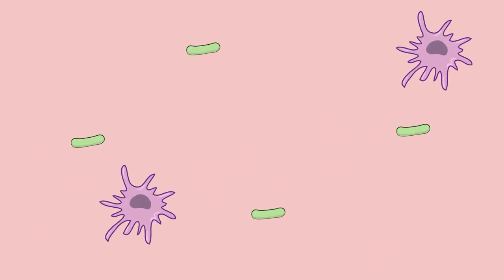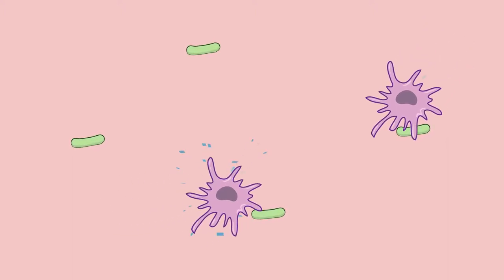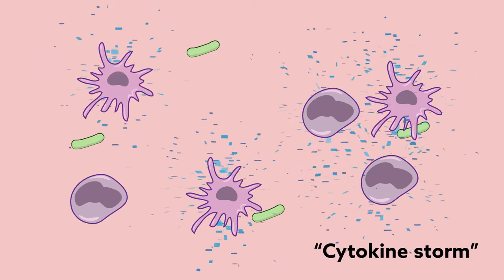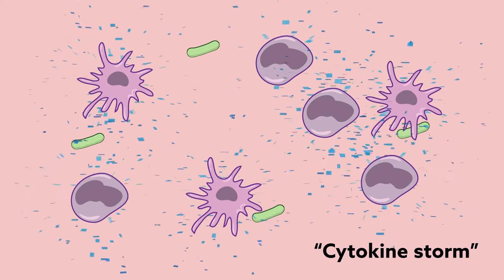Classically, sepsis has been thought of as a problem of an overactive immune system. As immune cells respond to infection, they unleash a torrent of inflammatory cytokines, or what's called a cytokine storm, which can lead to organ failure.